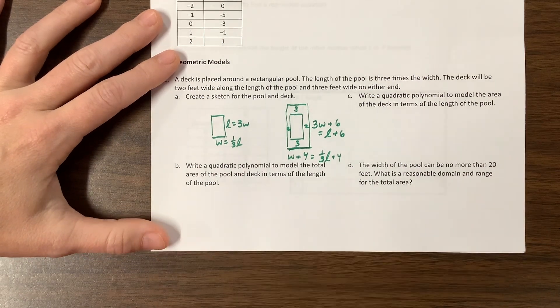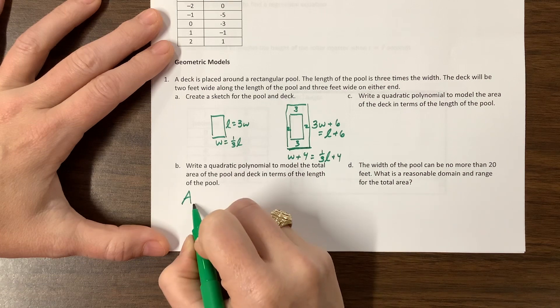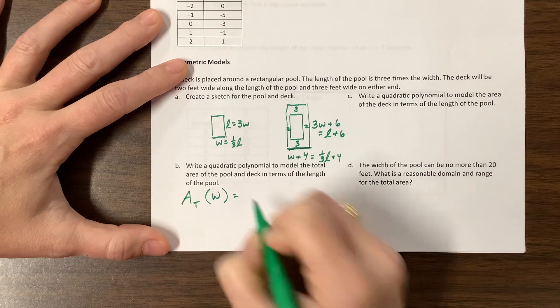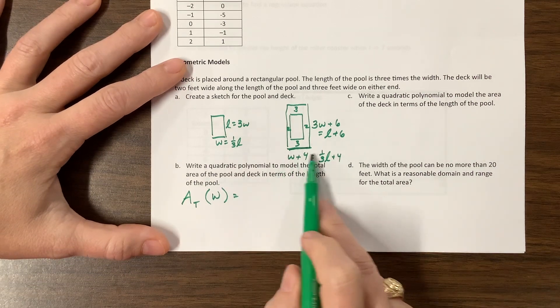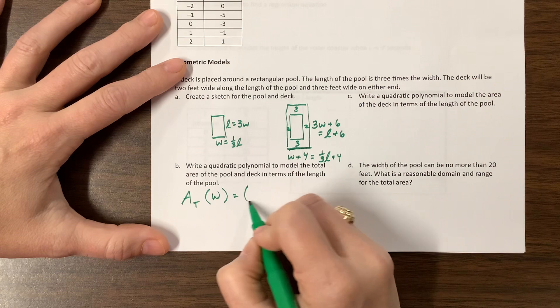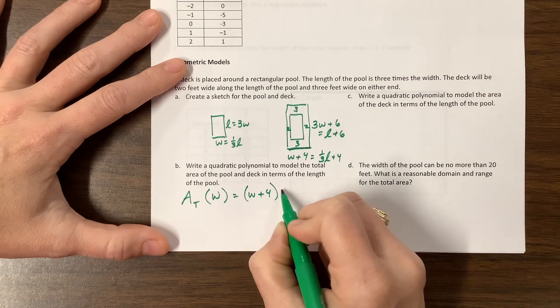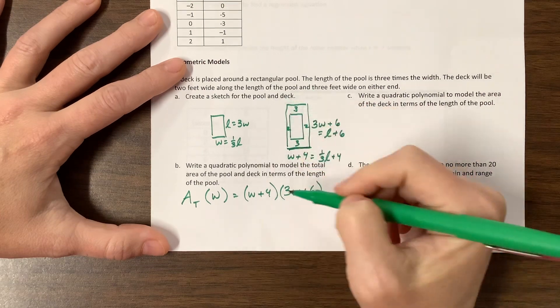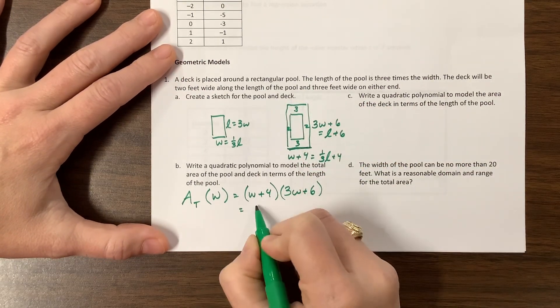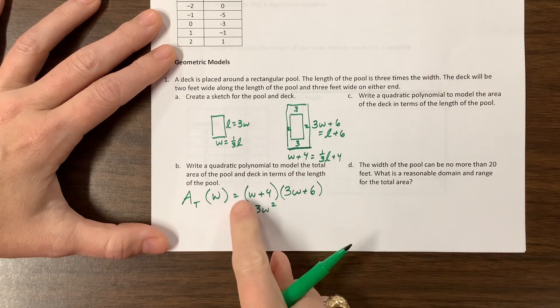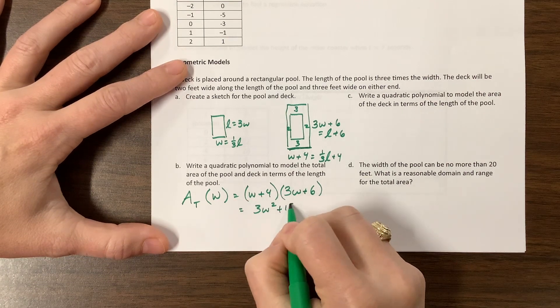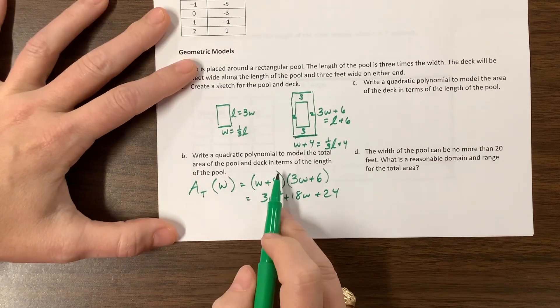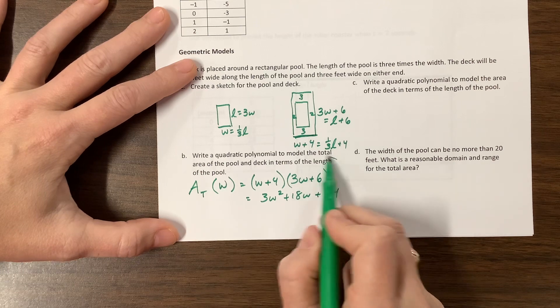So I think in my answer key, what I started doing is I would say a total, and I put a little t there, in terms of w, would be equal to, well, the total would be, this is w plus four for the base. So this is a rectangle, so it's base times height. And then the other one is this. So we're finding the total area of everything. And so that can clean up to three w squared plus 12w plus six is plus 18w plus 24, if I foil that out. I thought that was easier to work with, but I did not answer the question.